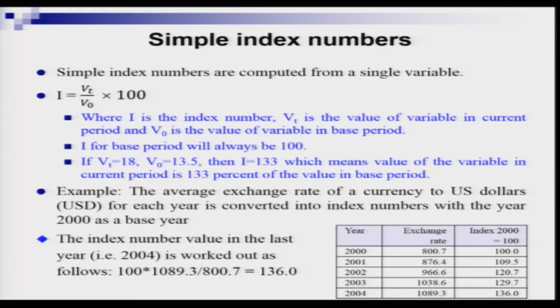Now we are going to start our discussion on simple index numbers. Simple index numbers are computed from a single variable. I denote the index number by capital I and the variable V, for which I am collecting values for different time periods. Vt is the value of the variable in the current time period and V₀ is the value in the base period, denoted by t = 0. The index number value for the base period will always be 100.